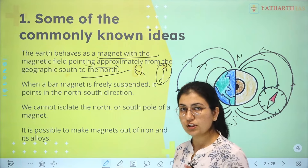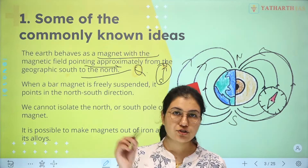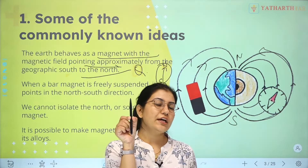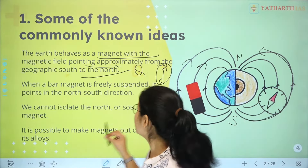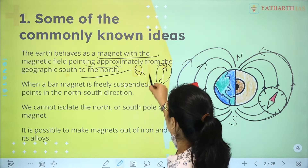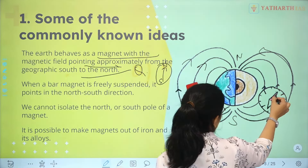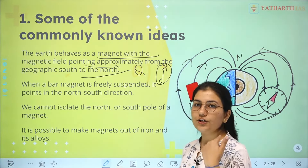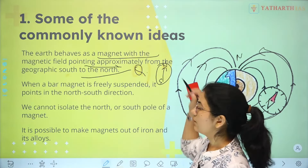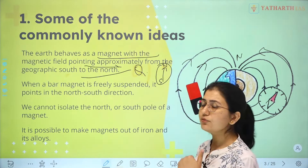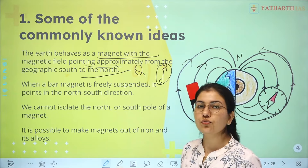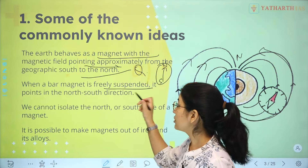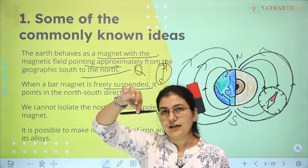The compass shows the north direction — this is why the compass points north. Similarly, a bar magnet that is freely suspended will point in the north-south direction.